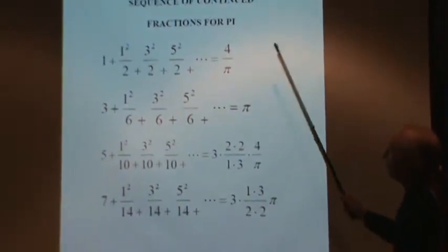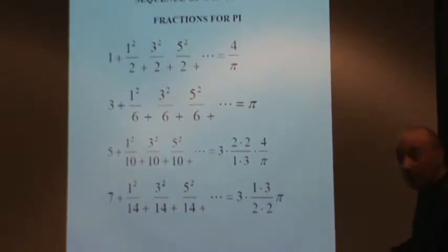And what they equal on the right changes. The first one has a pi in the denominator, then in the numerator, then in the denominator, then in the numerator, and so on. It goes like that.